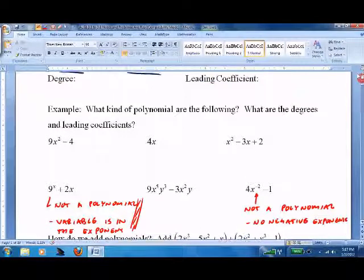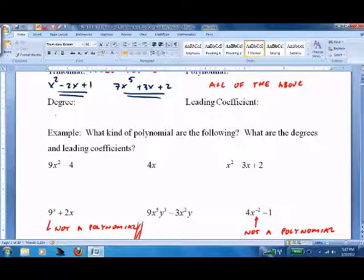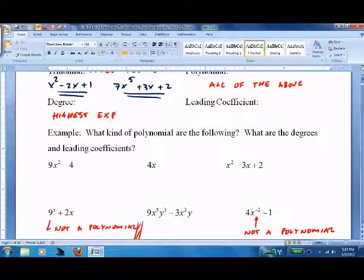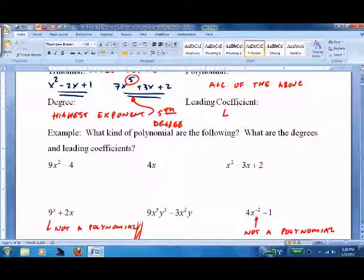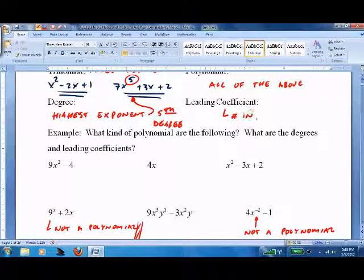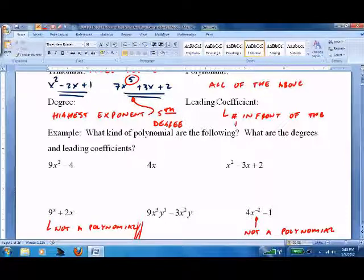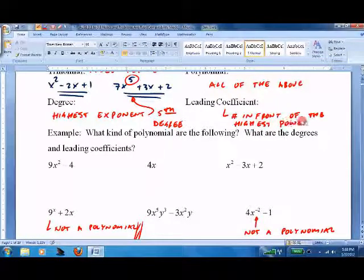We'll come back to this. What is the degree? That's the highest exponent. For the example directly above, that's a fifth degree polynomial - only three terms, but that's a five, so we call it fifth degree. And leading coefficient? That's the number in front of the highest power. So let's do examples.